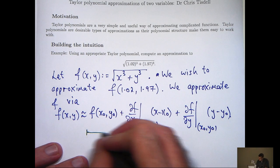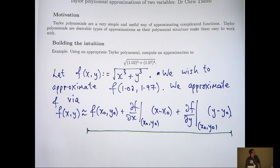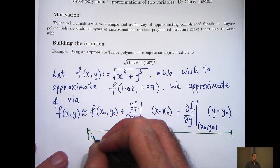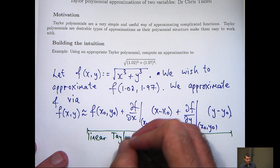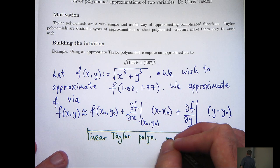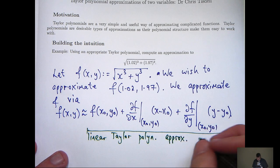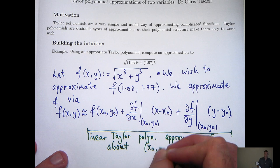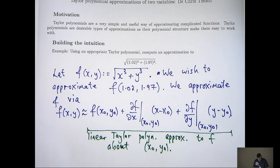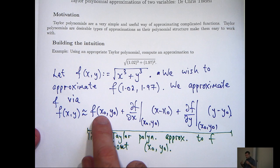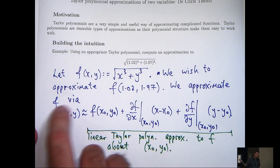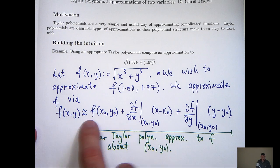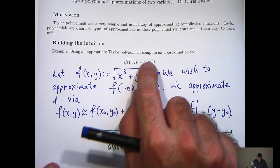This right-hand side is known as the linear Taylor polynomial approximation to f about the point x0, y0. Okay, so basically what this expression says is that for all x points and y points close to x0 and y0, f of x, y is approximately equal to this right-hand side. So we can use that information now to approximate this.